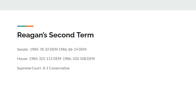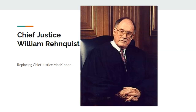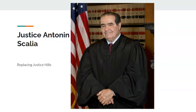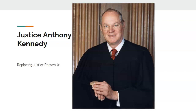Within Reagan's second term, after 1984, Democrats have a 78-seat Senate majority and a 325-seat House majority. After 1986, Democrats would have an 86-seat Senate majority and a 330-seat House majority. The Supreme Court would remain 8 to 1, but Reagan would nominate three more judges: Chief Justice William Rehnquist replacing Chief Justice George McKinnon; Associate Justice Antonin Scalia replacing Justice Carla Hills; and Associate Justice Anthony Kennedy replacing Justice Perrow Jr. Three justices from our real timeline make it onto this alternate timeline's court.